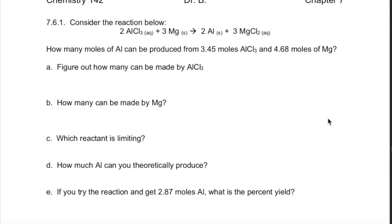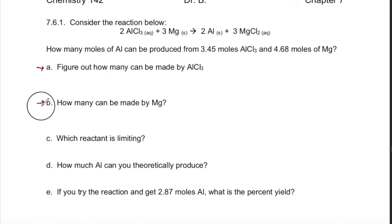Let's look at this first example. We are figuring out how many moles of product can be produced, and we're given both starting materials. That is our clue that we are working on a limiting reactant problem because we have two different starting materials. The process is to figure out the amount of product produced for each of the starting materials separately, so let's list our relationships.